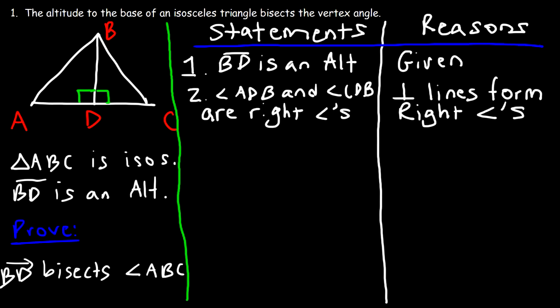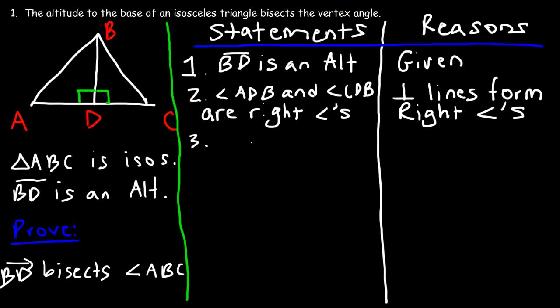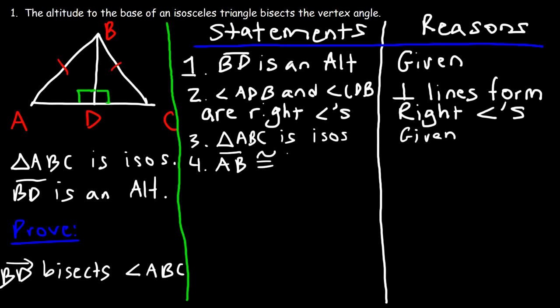What other facts do we know? Triangle ABC is isosceles — that's a given statement. We know that the two sides of an isosceles triangle are the same, so we can say that segment AB is congruent to segment CB. The reason we can write is the definition of an isosceles triangle.